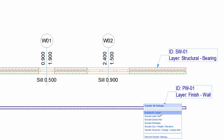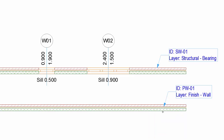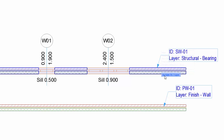Now select the Exclude ID Layer set. By using this set we can add all the properties of the Structural Wall except the layer and ID. Note: the set you choose here becomes the default Transfer Set for the next Parameter Transfer injection operation.